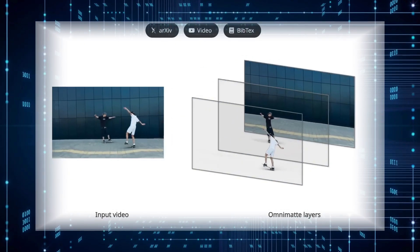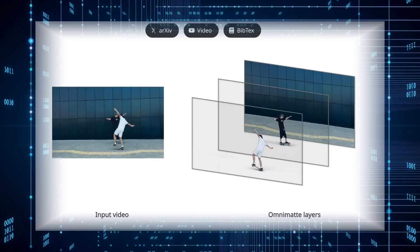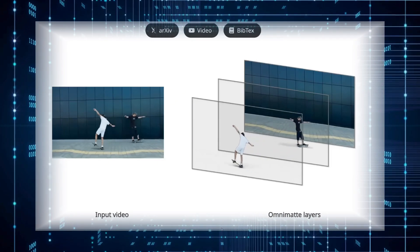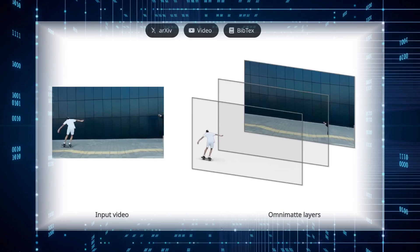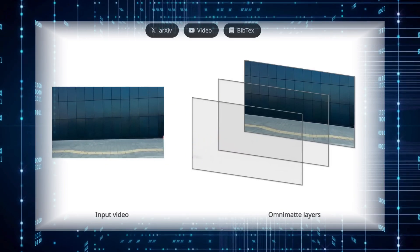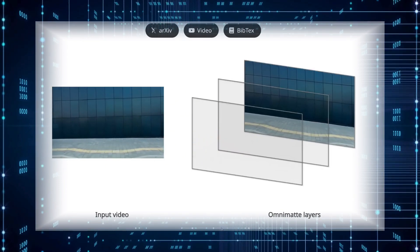Even if objects are partially blocked in the video — like a person obscured by someone in front — this AI can still generate a clean, separate layer for that person seamlessly throughout the video.